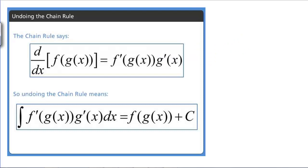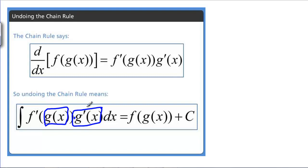What we're saying is: if we have the chain rule — one function plugged inside of another — we know we get the derivative of the outside function with the inside function plugged in, times the derivative of the inside function. Therefore, if we're trying to take an integral and we notice this pattern — that it's the derivative of some function with some other function plugged in, multiplied by the derivative of that plugged-in function — then we know it was a chain rule and we can undo it by getting back the original function with the inside function plugged in.